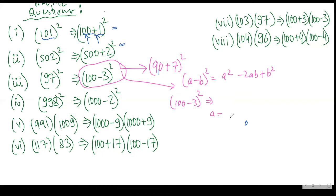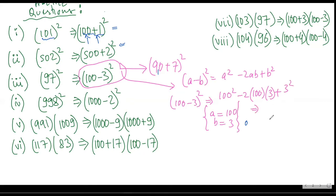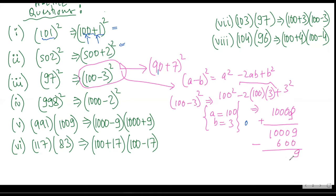If I write this as (100 - 3)², my a would be 100 and b would be 3. So this would be 100² minus twice of 100 into 3 plus 3². This would be equal to 10000 plus 9, minus 600. So my final answer would be 9409.